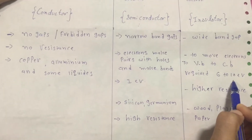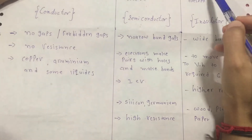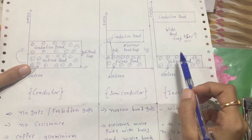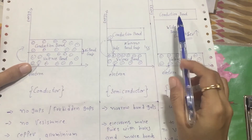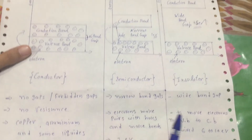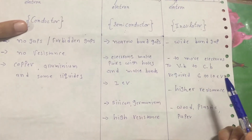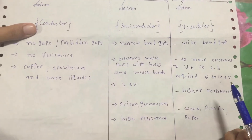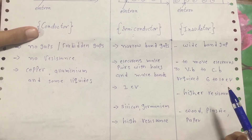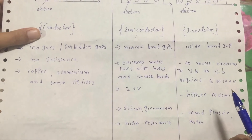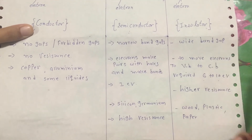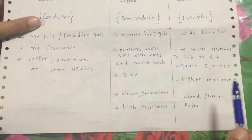When six to ten electron volts are applied, the valence band electrons start to move from the valence band to the conduction band. That's why when the supply is less than six to ten volts, no electrons pass through the material.